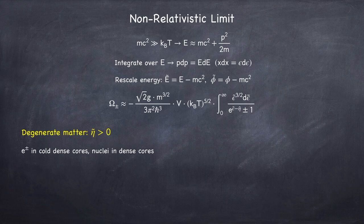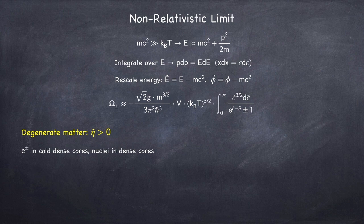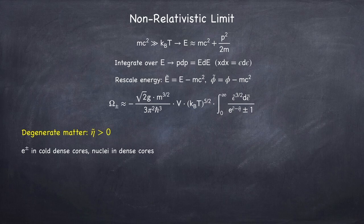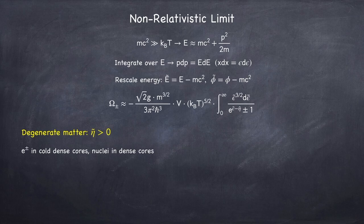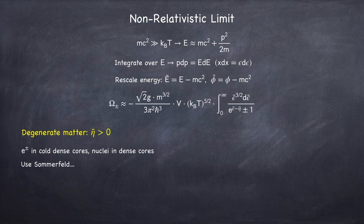This will apply to electrons and positrons in cold dense cores, and nuclei in dense cores. So for example white dwarfs, when they first form, are quite hot. And so in this case the electrons would be degenerate but relativistic. After a while the white dwarf will cool down. The electrons will remain degenerate, but they'll no longer be relativistic. And again you can use the Sommerfeld expansion to approximate the integral.